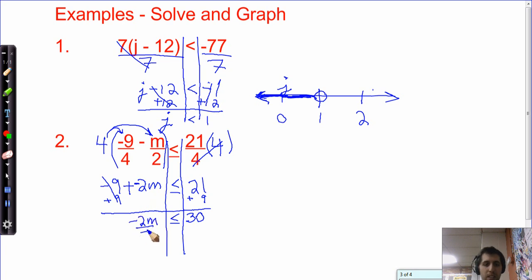Final step is going to be to divide both sides by negative 2. And, when we're dividing both sides by negative, the sign flips. So, m could be greater than or equal to negative 15.